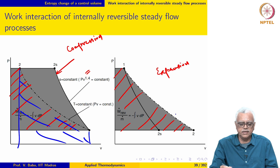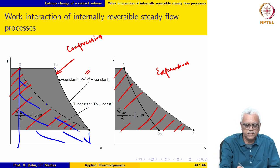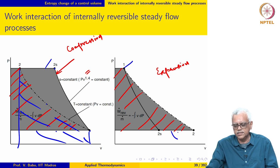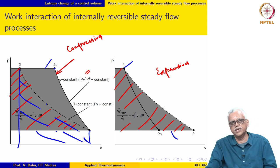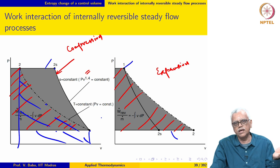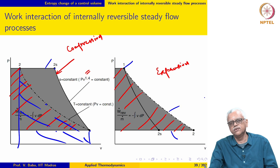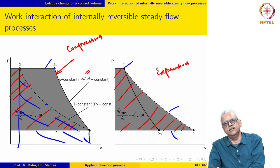Notice that in a compression process, where work is being put in, the power required to compress between the same two pressures is less for the reversible isothermal process compared to the reversible adiabatic process. Conversely, the power produced by a reversible isothermal expansion process is more than for the adiabatic case. This shows that the reversible isothermal process is better both for power absorption in compression and power generation in expansion.